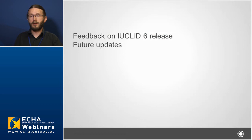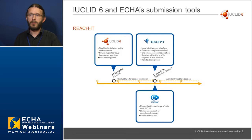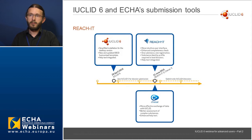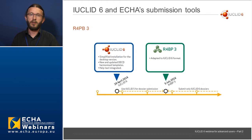IUCLID 6 was made available at the end of April, and for REACH submissions the format switched to IUCLID 6 on 21st of June when REACH-IT was updated. Since the 21st of June 2016, ECHA is accepting REACH and CLP data only in the IUCLID 6 format. For BPR information, the change was done when R4BP3 was updated on the 5th of July 2016, so BPR CSR dossiers have to be submitted in IUCLID 6 format since that date.